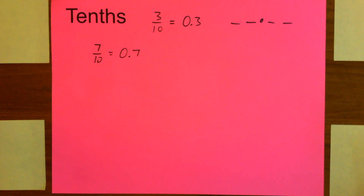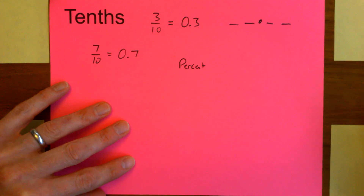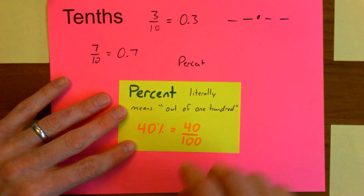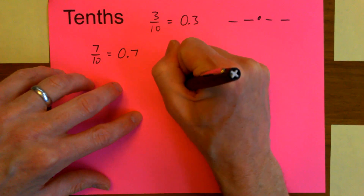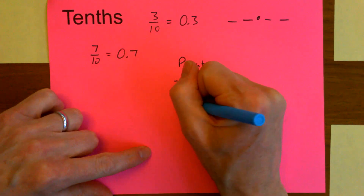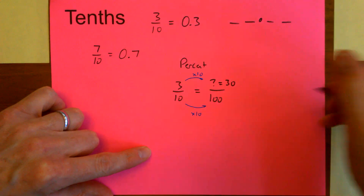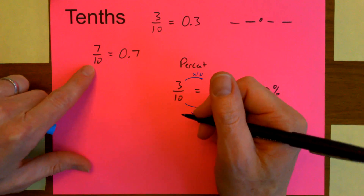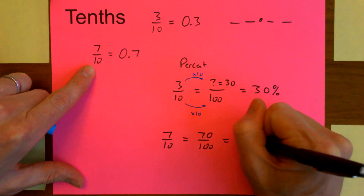How do we convert to the percent? So three-tenths is three over ten. Percent literally means out of one hundred — that's what that word actually means. So we need to convert this into a fraction out of one hundred. If we have three out of ten, that's going to be how many out of one hundred? If I multiply the bottom by ten and the top by ten, I get thirty out of one hundred, or thirty percent.